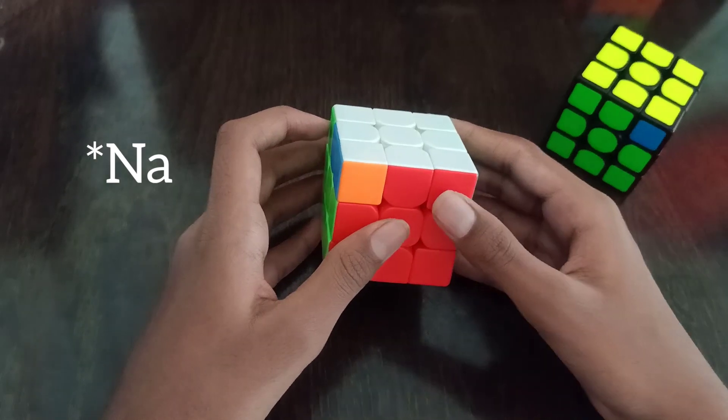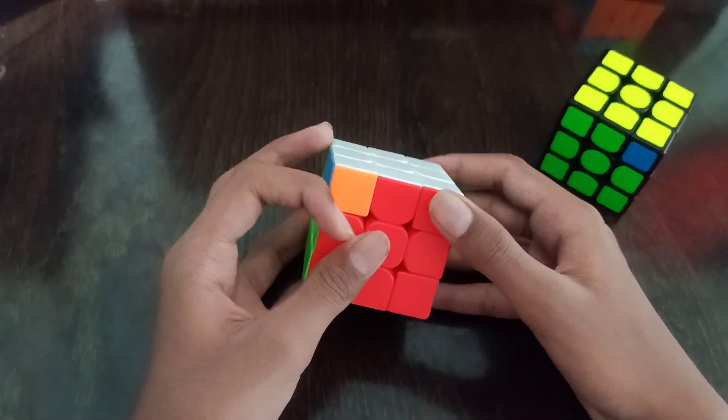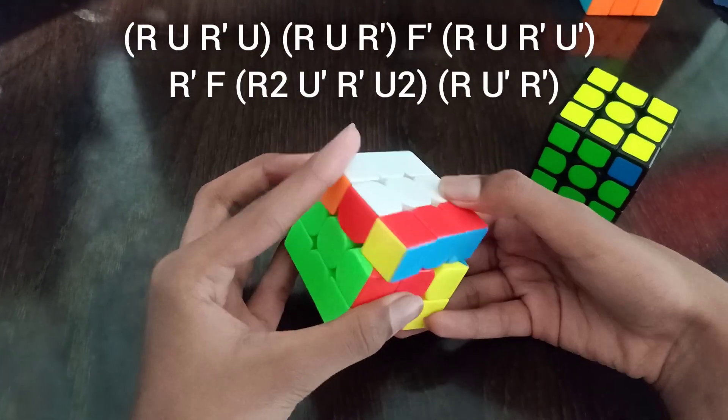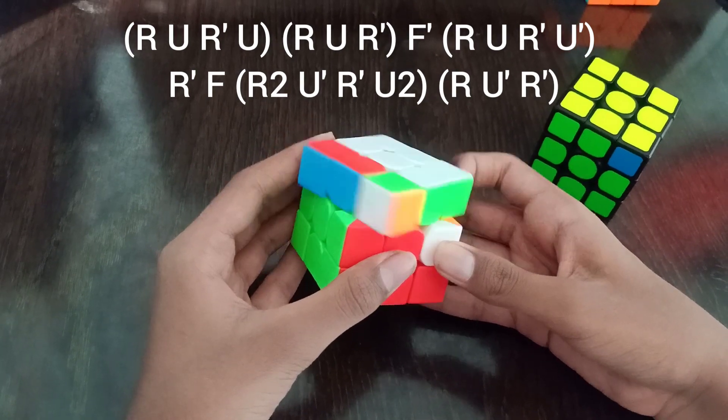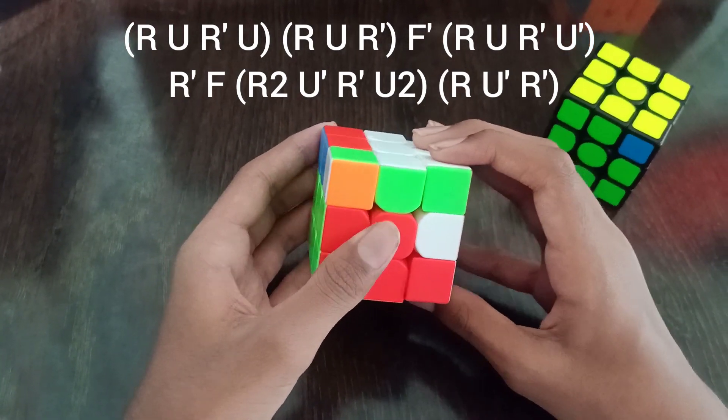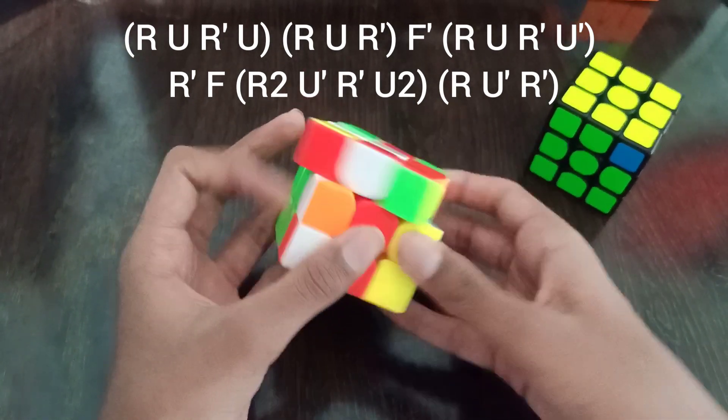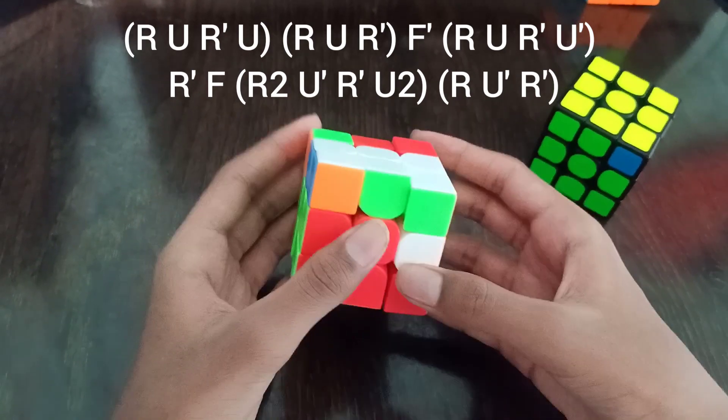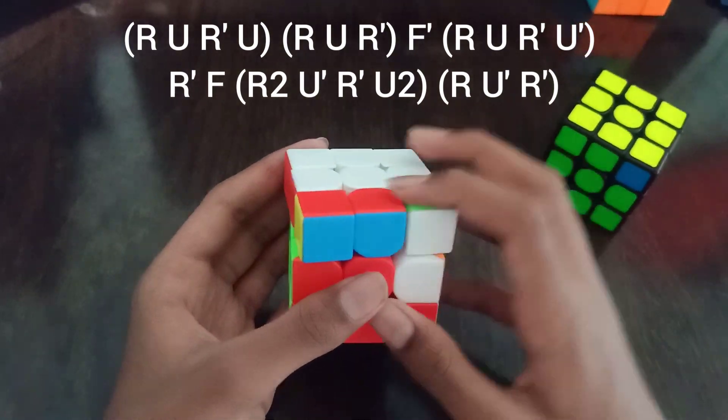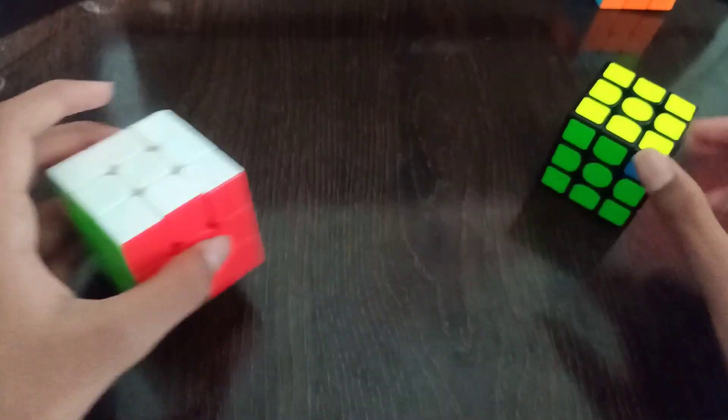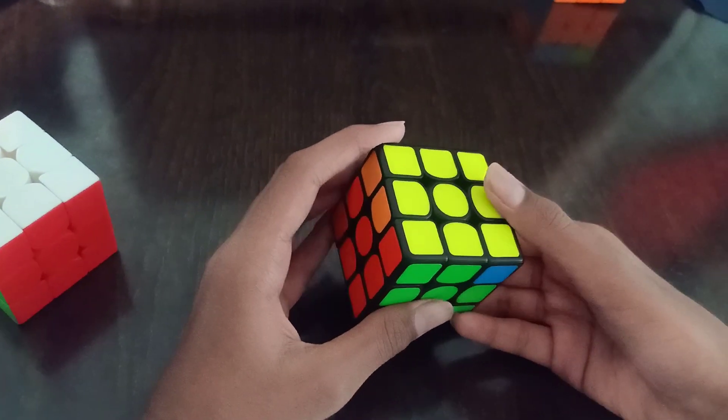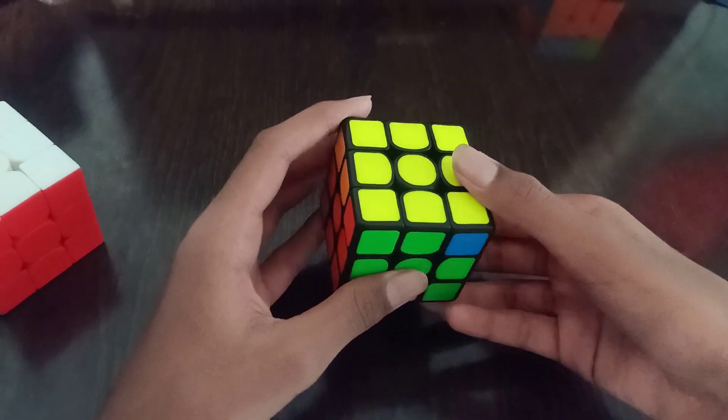To do NB permutation, we do R U, R prime U, and here we do a J permutation and do a U two and just insert this pair. To do the algorithm, we do this.